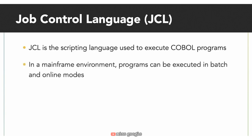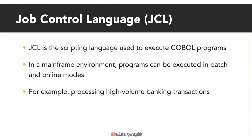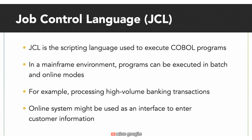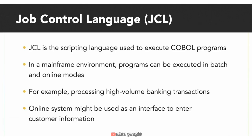In a mainframe environment, programs can be executed in batch and online mode. An example of a batch system is processing bank transactions through a VSAM file and applying them to corresponding accounts. An example of an online system is a back-office screen used by staff to open a new account. In batch mode, programs are submitted through a JCL. This course won't delve into JCL since I'm using GNU COBOL on a personal computer, but for more information, check out the IBM Knowledge Center.